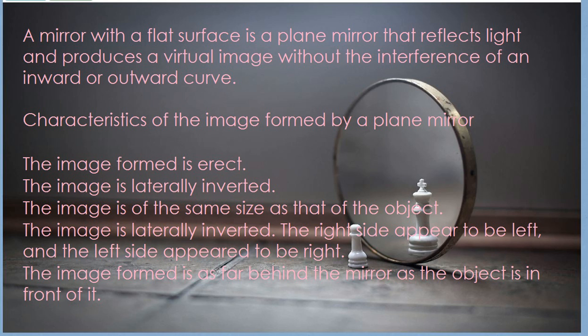Characteristics of the image formed by a plain mirror: How should you identify that this image is formed by a plain mirror? First of all, the image formed is erect — it's not inverted — so therefore it's a virtual image. The images are laterally inverted, meaning your left hand will appear as the right hand and your right hand will appear as the left hand in the image.